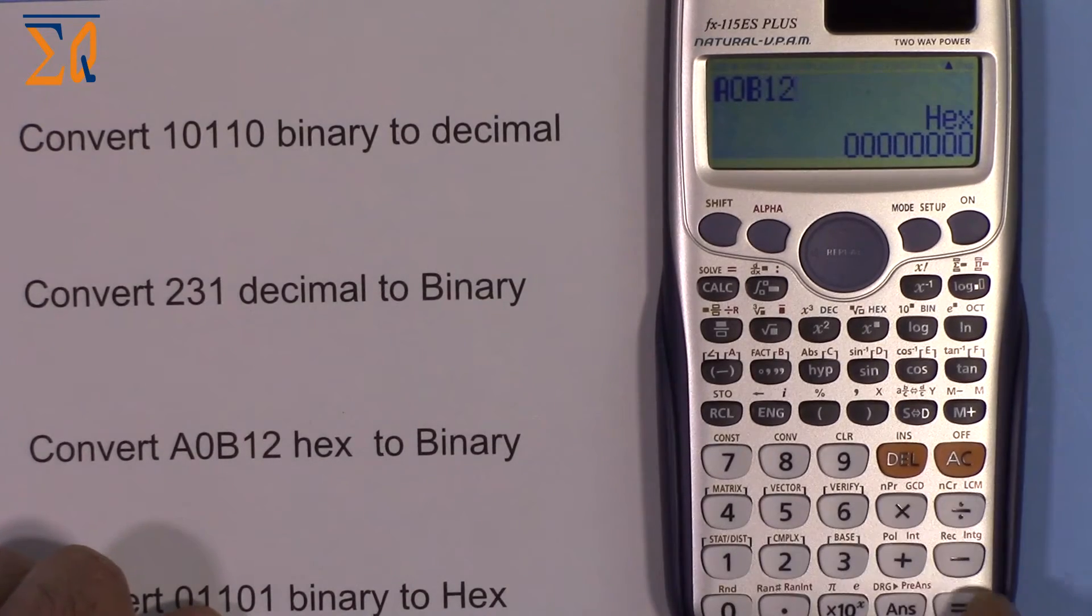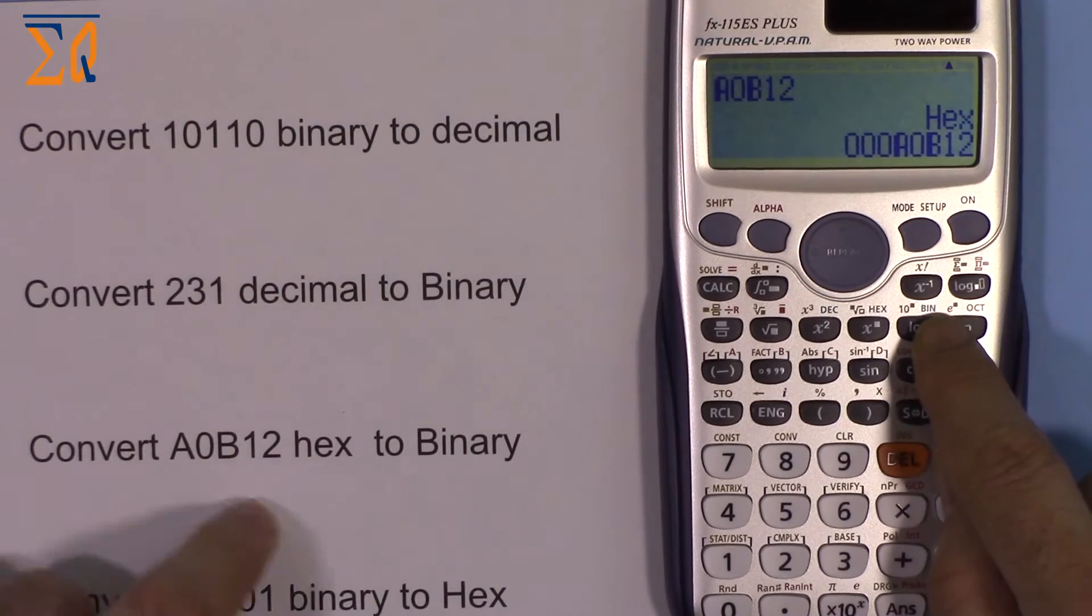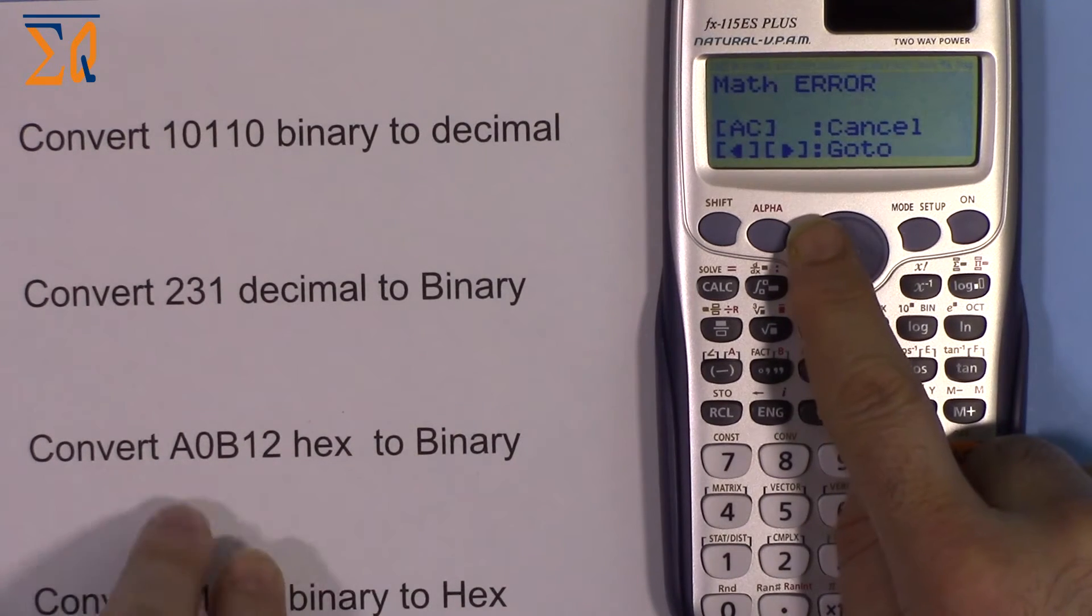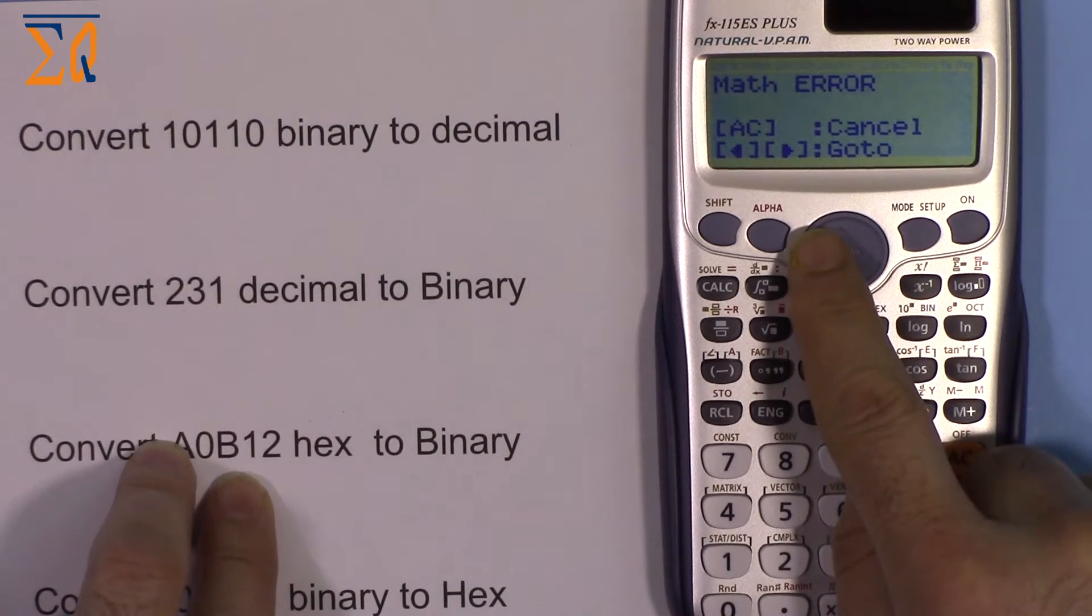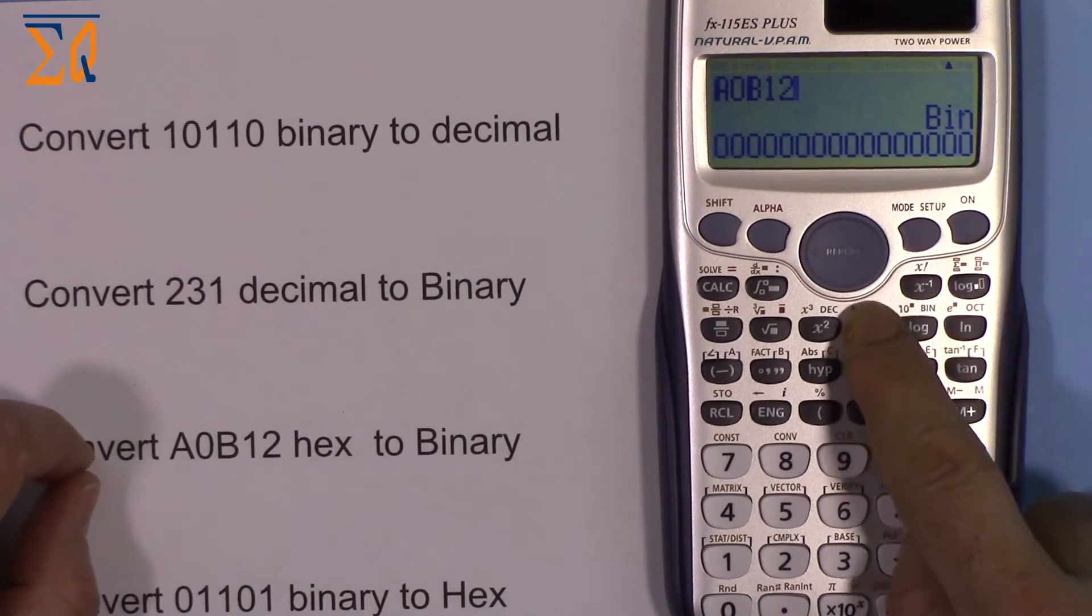I press equal sign and the value appears. Now to convert to binary I press BIN. I got an error because this is way above the capacity of the calculator - it's too big for binary. I go back to hex mode and remove the last digit.